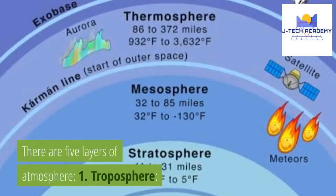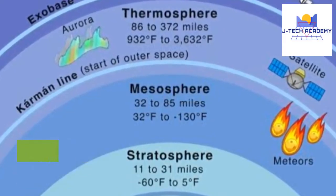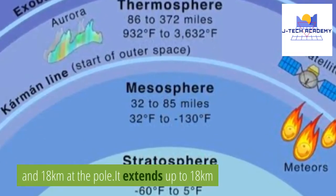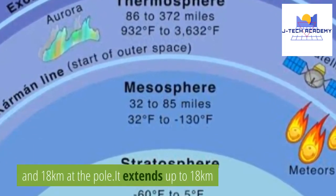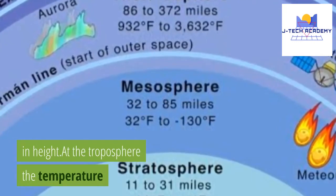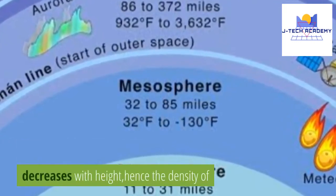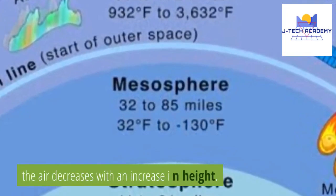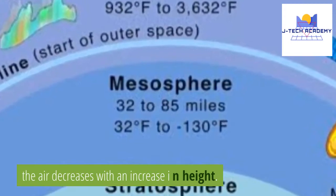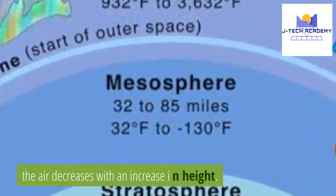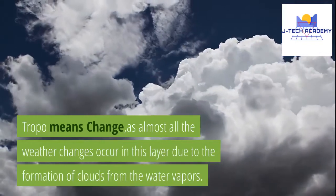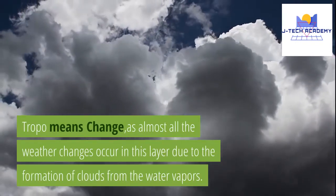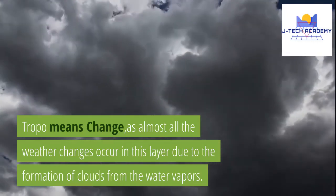There are five layers of atmosphere. 1. Troposphere. It is the first layer of the atmosphere, extending up to 18 km in height at the equator and 18 km at the pole. At the troposphere, the temperature decreases with height, hence the density of the air decreases with an increase in height. Tropo means change, as almost all the weather changes occur in this layer due to the formation of clouds from the water vapors.